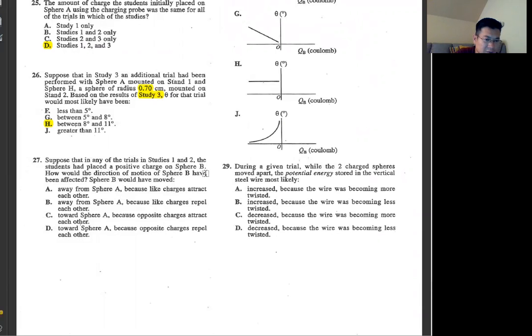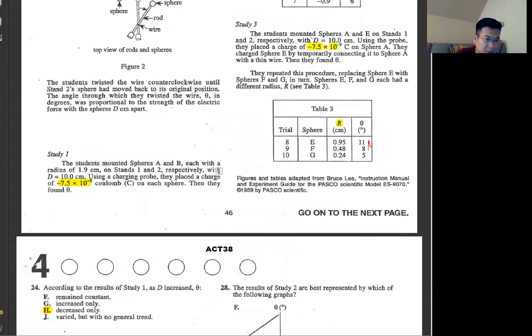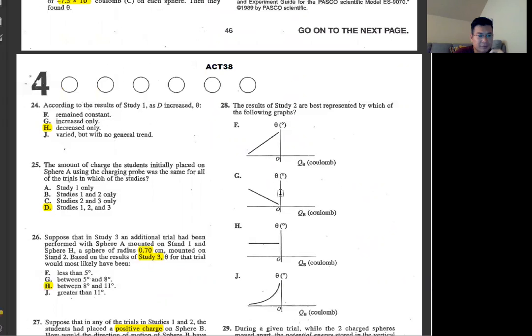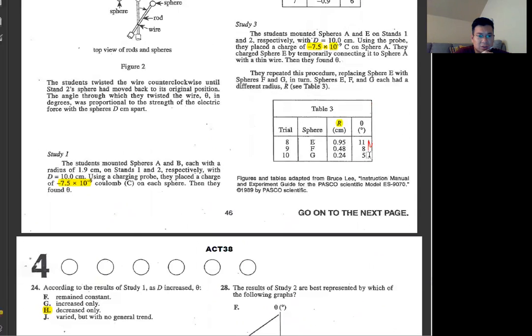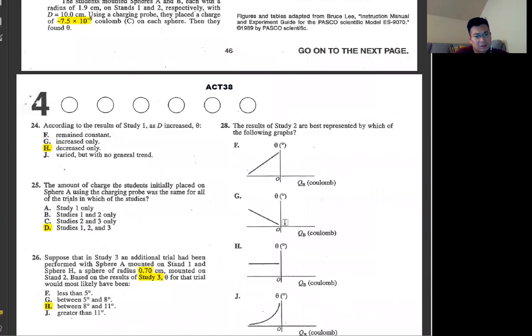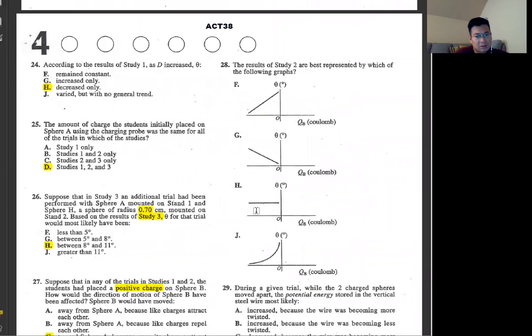Number 27, suppose in any of the trials in study 1 and 2, the student placed a positive charge on Sphere B. Everything right now is negatively charged as we see from each one of them. So positively charged would stick together because opposite charges attract each other. Number 28, the student's results from study 2 are best represented by which of the following graphs? Study 2, X is QB and Y is theta. As X value is getting greater, Y value decreases. So which is G.